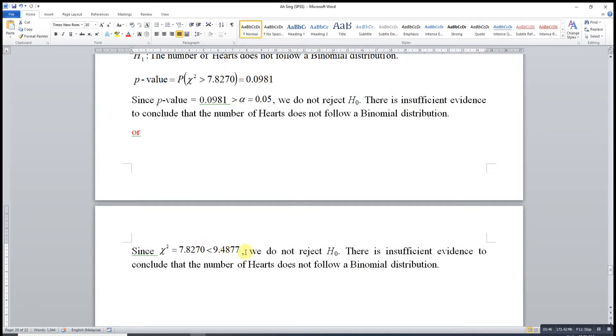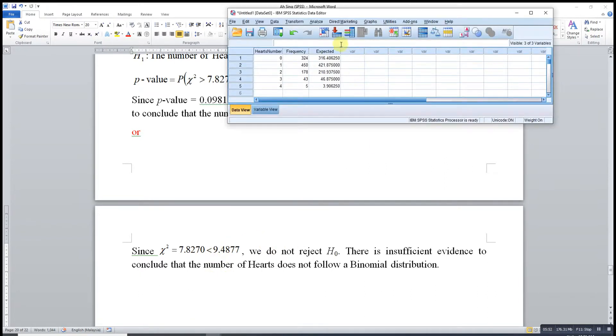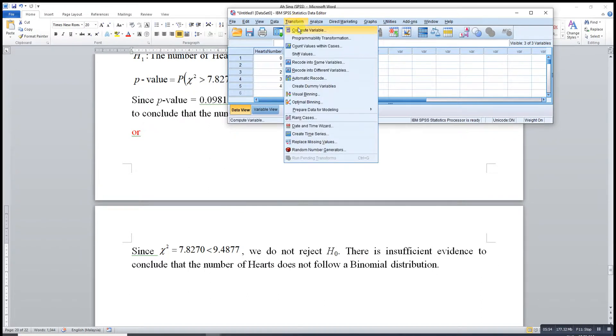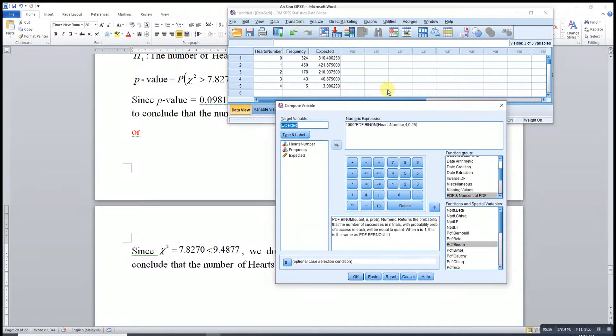We do not reject H0 and conclude that there is insufficient evidence to say that the number of hearts does not follow a binomial distribution. Or we can do it another way by using the critical value. To obtain this critical value, we can go to Transform, Compute Variable.